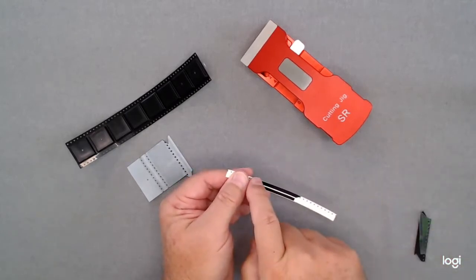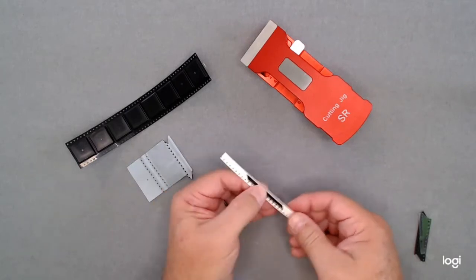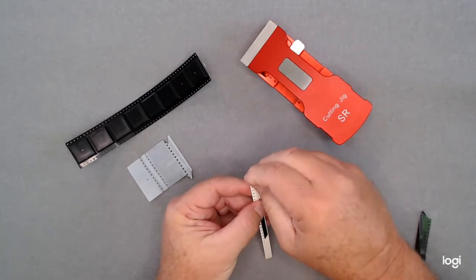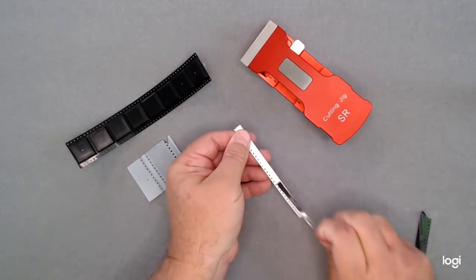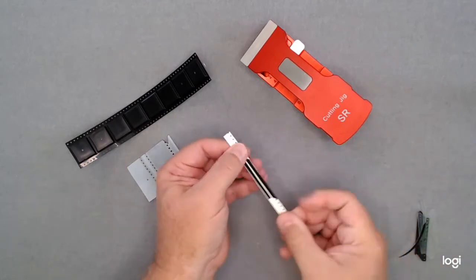You'll notice we have the sprocket holes covered because it's for a Panasonic type system and we have a very firm splice. All you need to do is pull your tape off and you can see that it pulls both sides off without any issue and we still have a good firm splice.